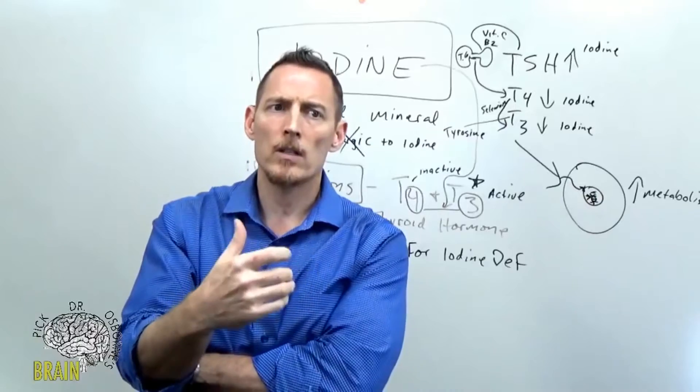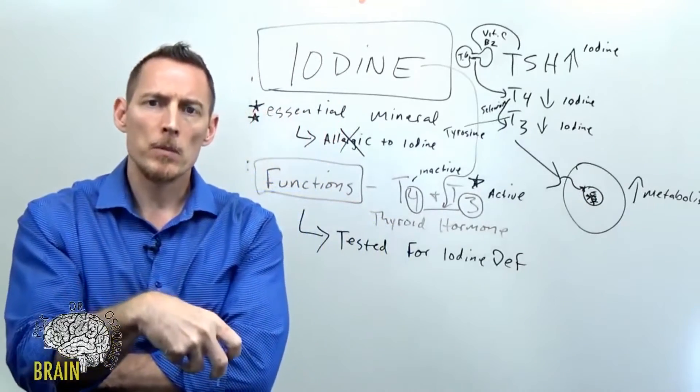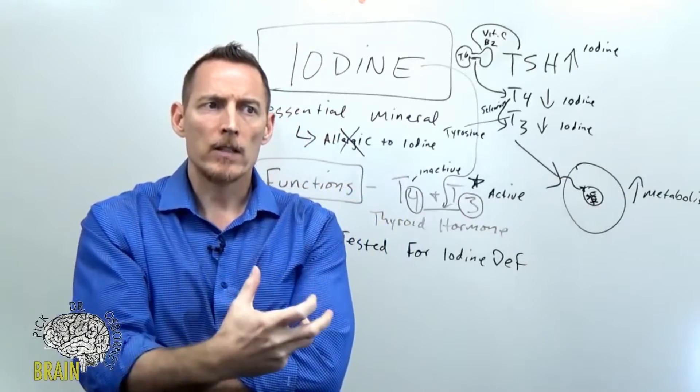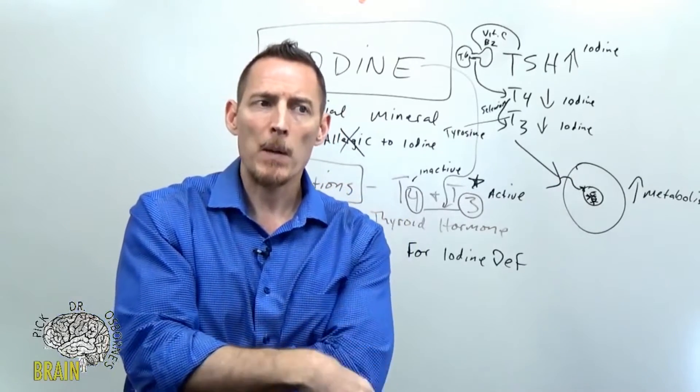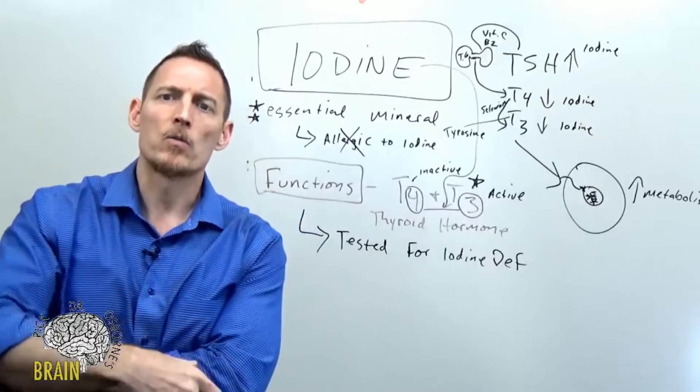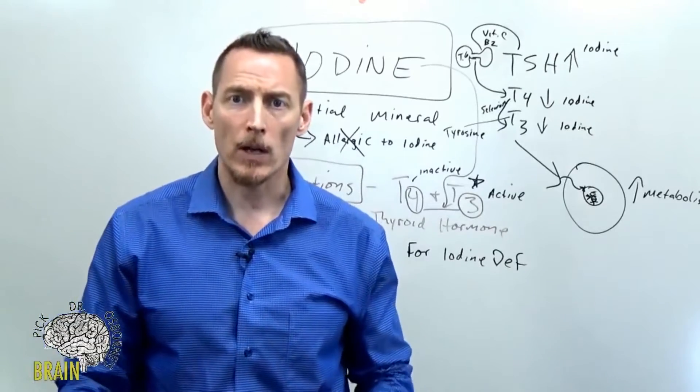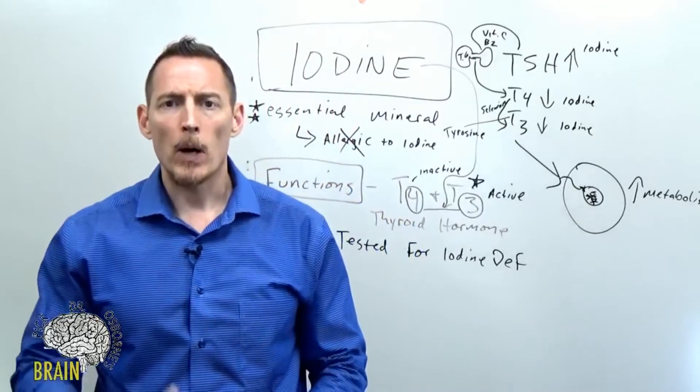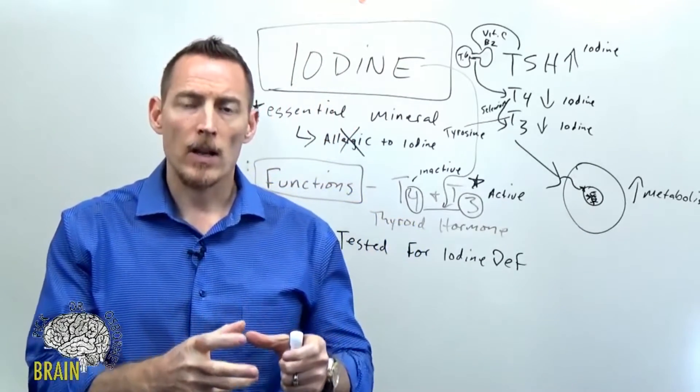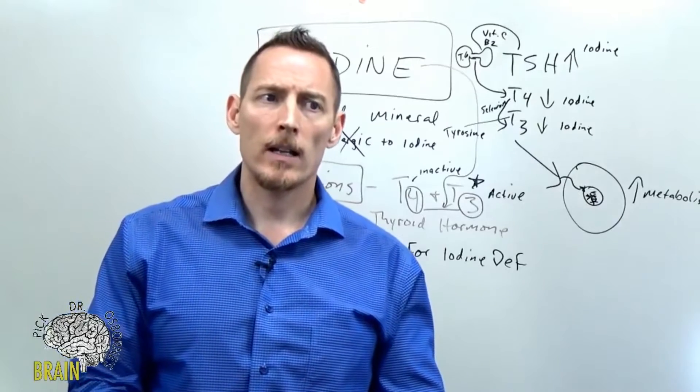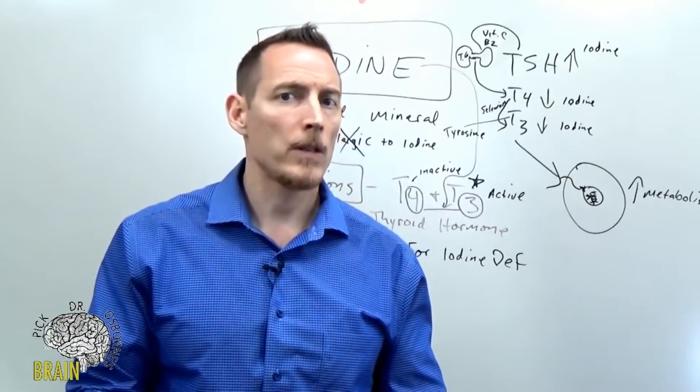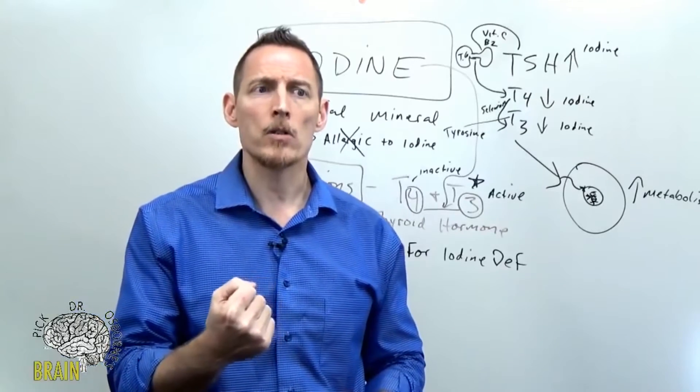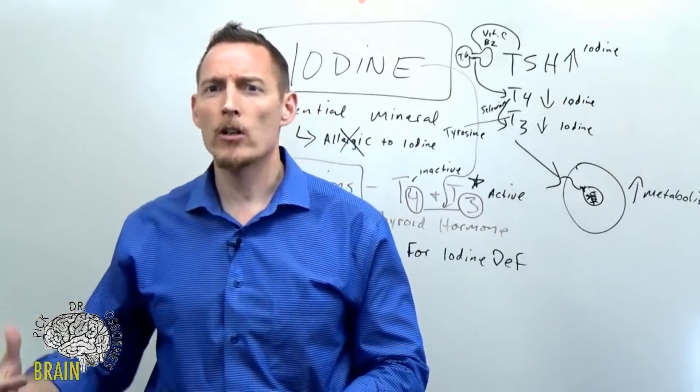Myeloperoxidase is an enzyme that the immune system uses to kill bad bacteria and to have an effective immune response. So the byproduct of myeloperoxidase reacting would be an inflammatory process. Now one of the things that activates myeloperoxidase as an enzyme is high levels of hydrogen peroxide and a substance known as chlorine.